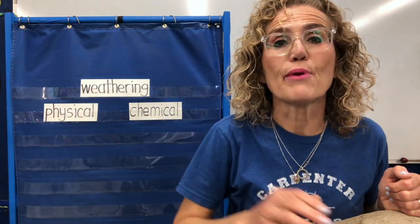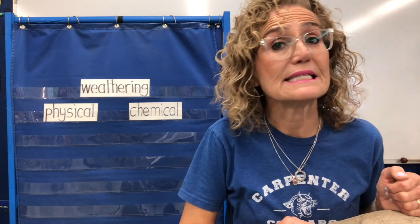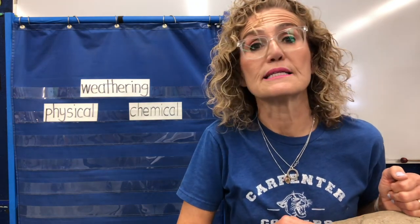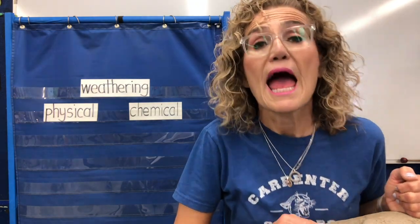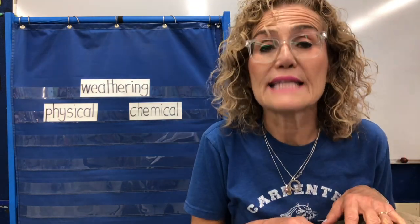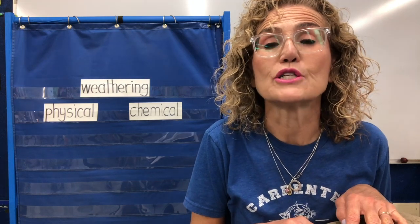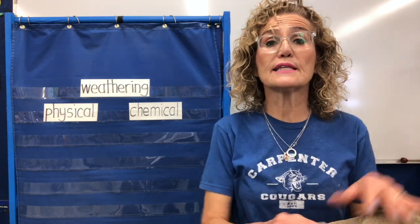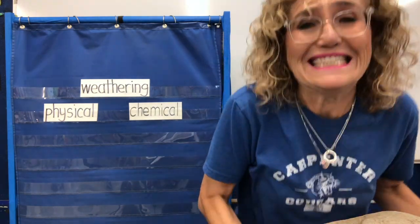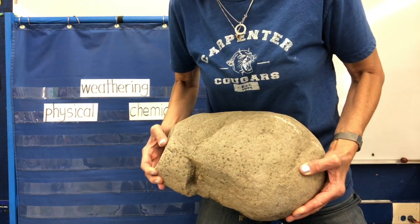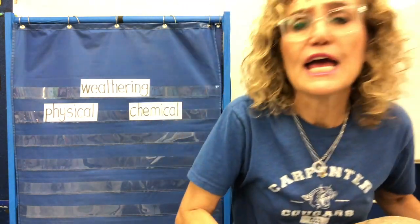Gravel starts breaking into smaller pieces and turns into sand. Sand turns into silt. And if that silt stays in water for a long time, it turns into clay. Clay is the smallest earth substance. The process of turning a big rock into a grain of sand is weathering.